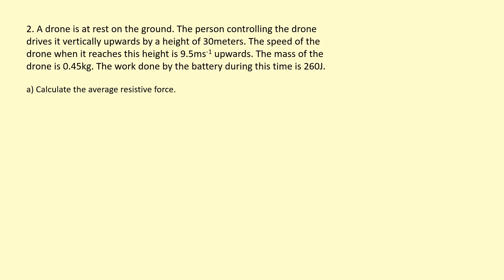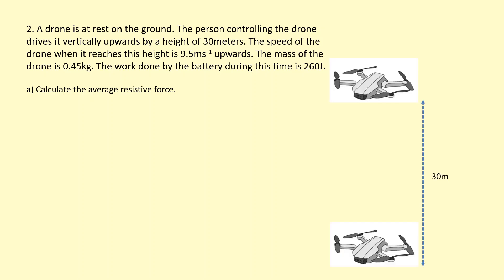A drone is at rest on the ground. The person controlling the drone drives it vertically upwards by a height of 30 meters. The speed of the drone when it reaches this height is 9.5 meters per second. The mass of the drone is 0.45 kilograms, and the work done by the battery during this time is 260 joules. We're going to calculate the resistive force.